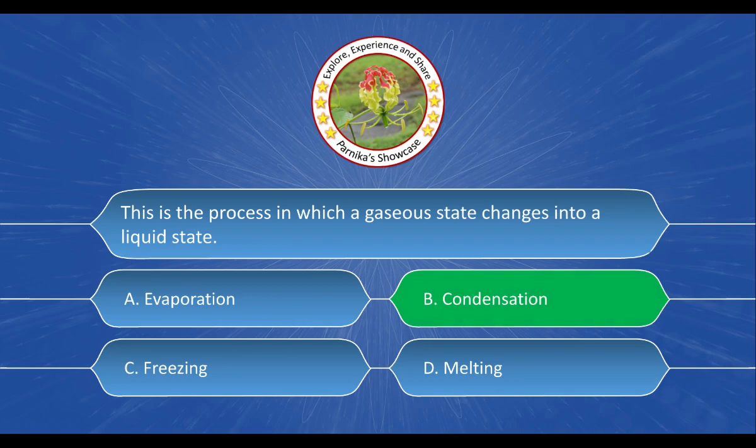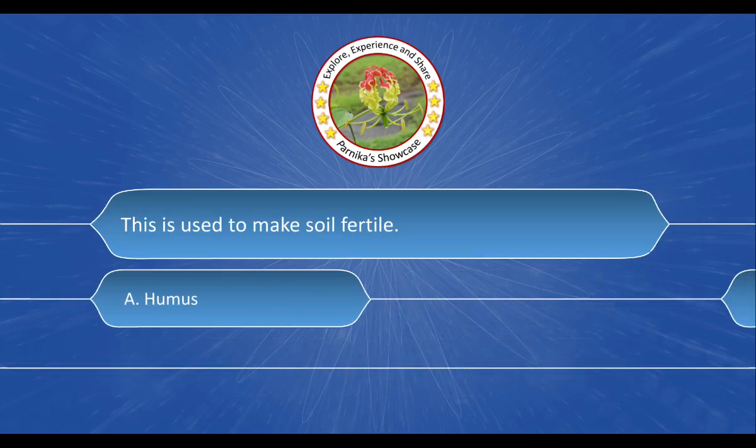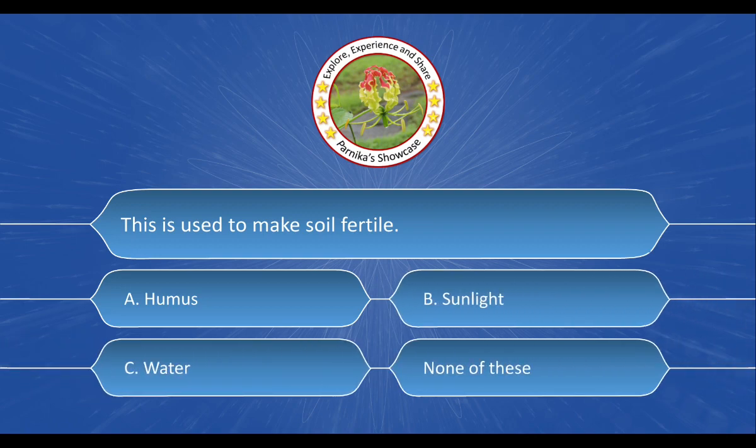This is used to make soil fertile, and the options are A. Humus, B. Sunlight, C. Water, D. None of these. And the correct answer is...